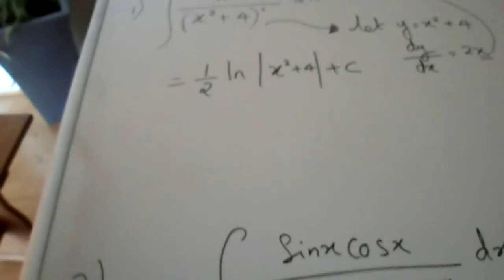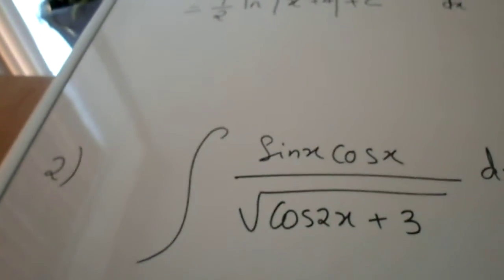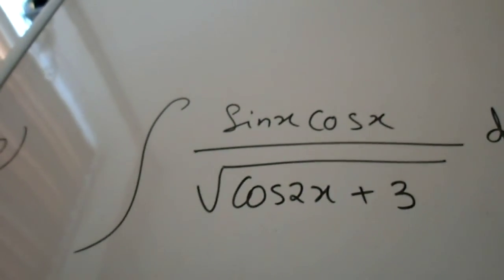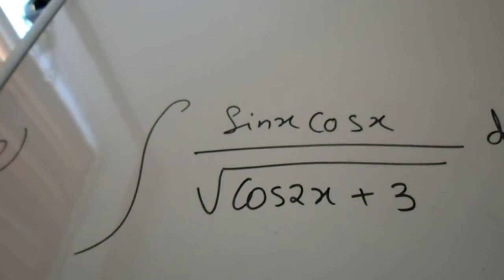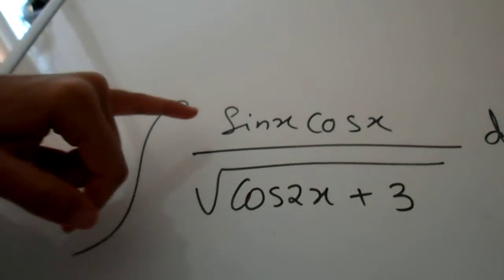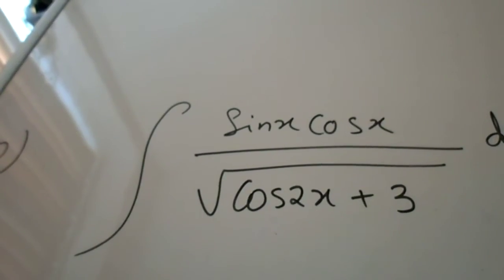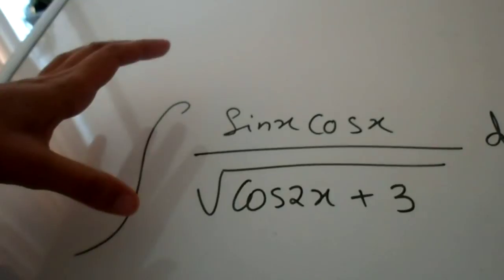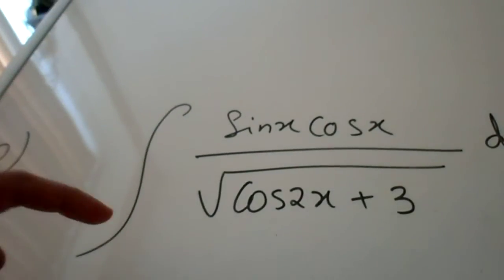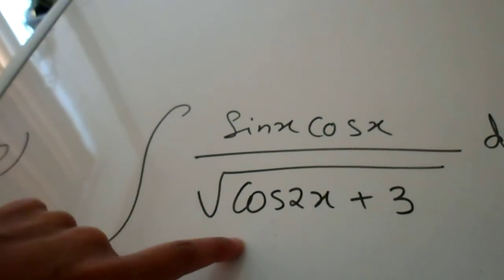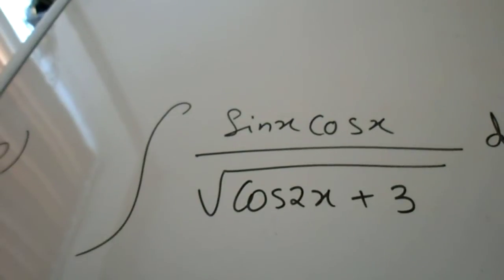The second type of questions are yet again to do with very similar identical if anything function. So here you have a trig over a trig. Now whilst it is true that the functions are the same however in this particular case we notice that the denominator the overall power in the denominator is not equal to 1.